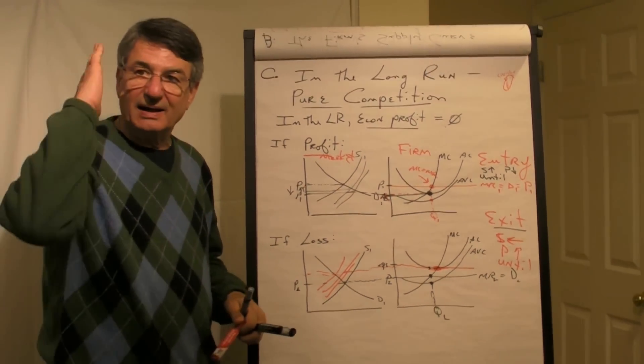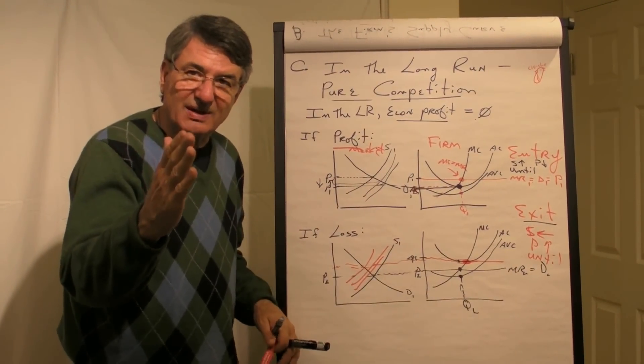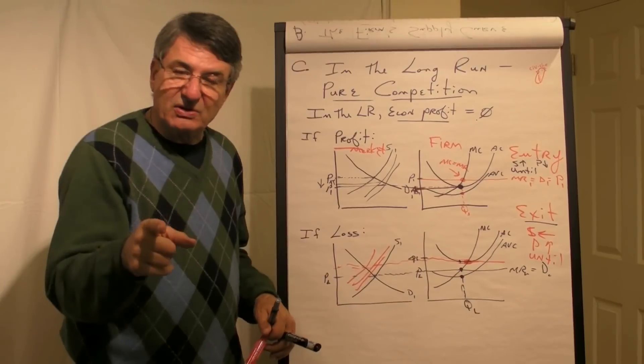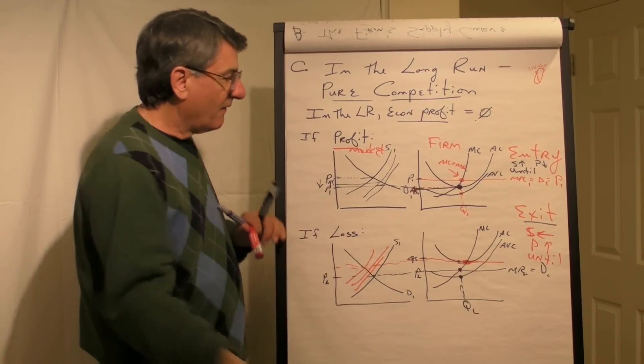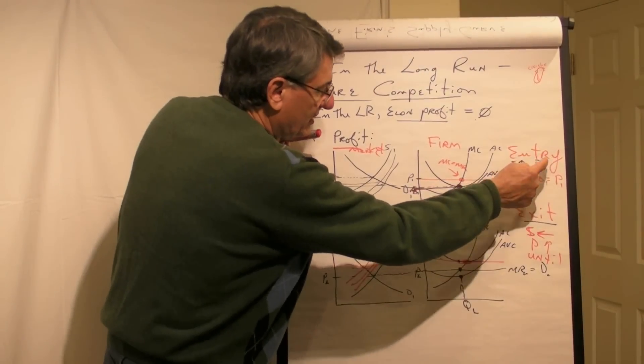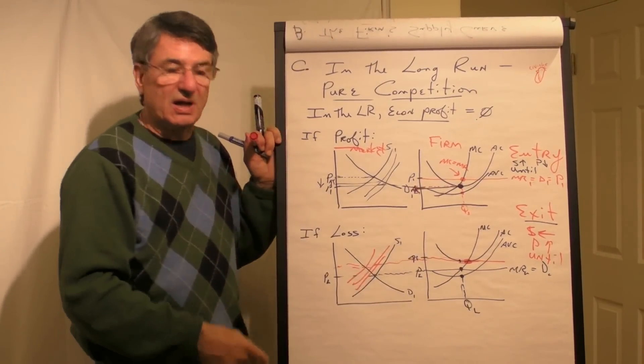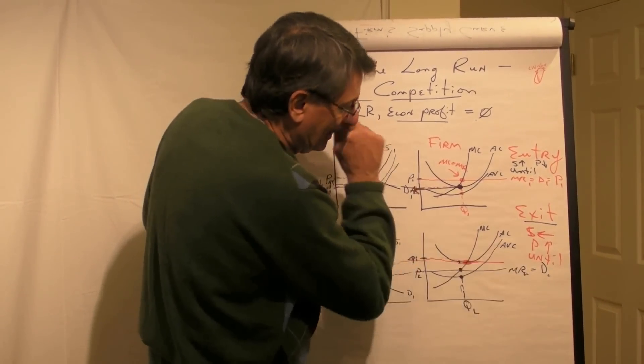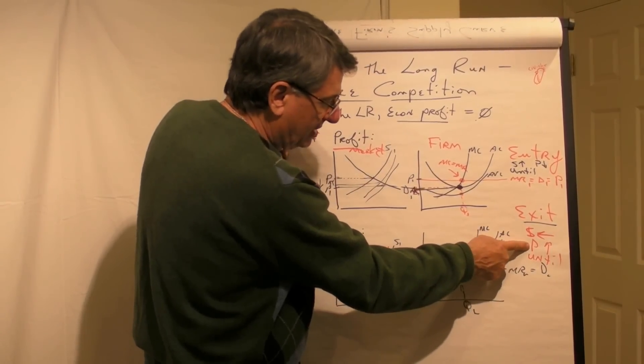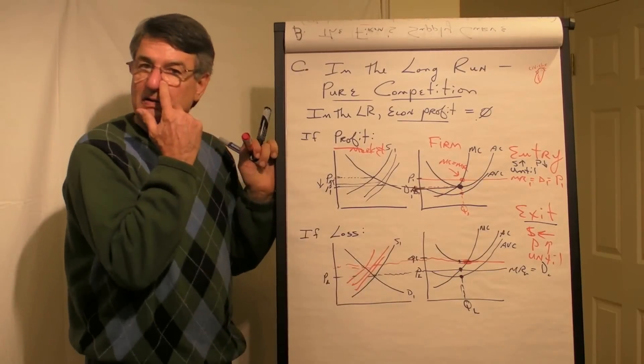So in the long run, economic profit equals zero. Price will equal average cost. If there are profits, firms will enter, the supply goes up, the price goes down until it's equal to average cost. If there are losses, exit occurs, supply shifts to the left, price goes up until price equals average cost.